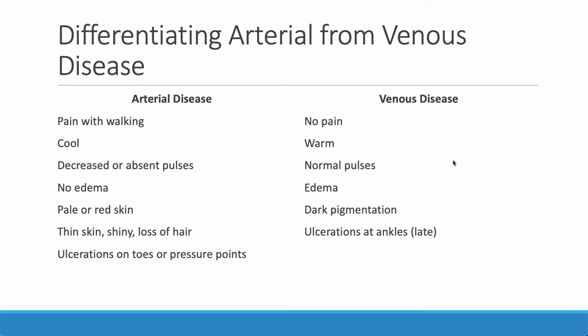Let's talk about the differences between arterial disease and venous disease. You learned these in undergraduate, but it's important to remember them now because now it counts. You need to be able to differentiate these things as a nurse practitioner. Typically, venous disease is painless — there's no pain that occurs with chronic venous insufficiency.